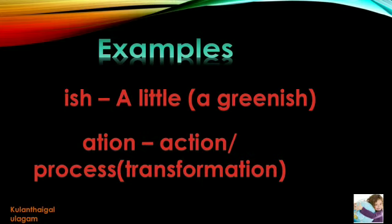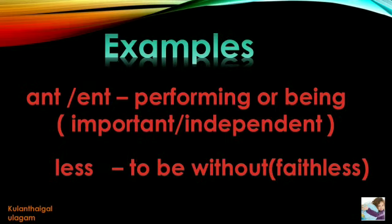If you add -tion or -ation to the end of the word, it means action or process. Example: transformation. If you add -ant or -ent at the end of the root word, it means performing or being. Examples: important, independent.